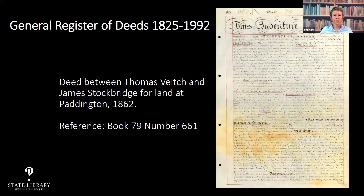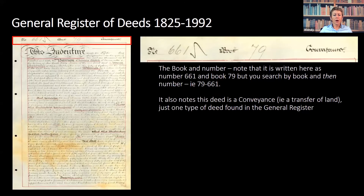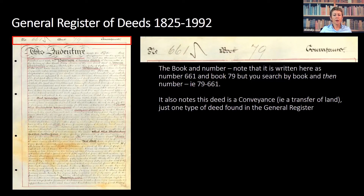I'm going to take you through a typical example of a deed. This is a deed for land sold at Paddington in 1862 between Thomas Veitch, the vendor, and James Stockbridge. Its reference number or attribute is book 79, number 661. The very first line presents a regular problem with deeds in the general register — the number has been inverted. So if you find a number related to a deed and search the HLRV, you must always put the book number in first and then the number. If you can't find what you're looking for, try inverting those numbers.